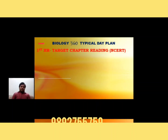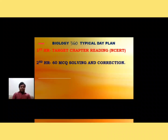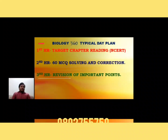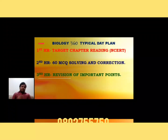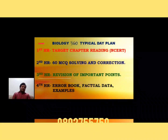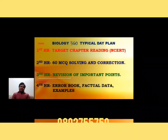A typical day plan: Hour 1 — read the target chapter, focusing only on NCERT since maximum questions come from NCERT. Hour 2 — solve around 60 MCQs (previously solved ones are fine), spending about 30 minutes solving and the rest on corrections. Hour 3 — revise important highlighted points and examples from completed topics repeatedly. Hour 4 — maintain your error book, focusing on factual data and examples. These four hours per subject, times three subjects, gives you 12 hours a day.